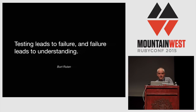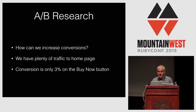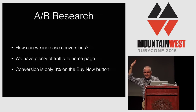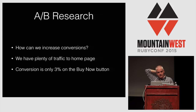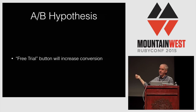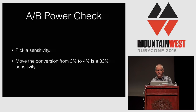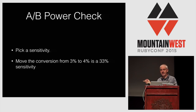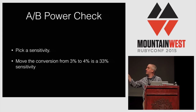Testing leads to failure and failure leads to understanding — this is clearly about A-B tests. How many people have done A-B tests or work at companies that do A-B tests? Everybody is thrilled about A-B tests. The classic example: it's always a 3% conversion on the buy now button, and you say let's change it to 'free trial' to increase conversion. Then you pick a sensitivity — most people skip this step and just say 'let's see what happens.' But you need to check the statistical power. I want to move conversion from 3% to 4%, a 33% sensitivity adjustment.